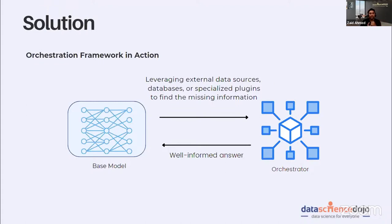The solution to all these problems with language models is an orchestration framework. Think of it as an agent — it gives context to your language model by storing data in a vector database, performing semantic search, and feeding the context along with your query to the language model so you get a well-informed answer. Examples include LangChain, LlamaIndex, and ZenML.